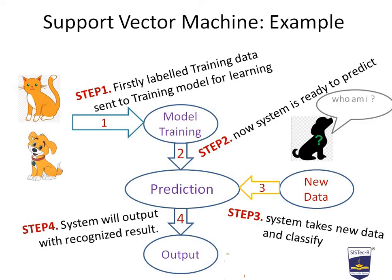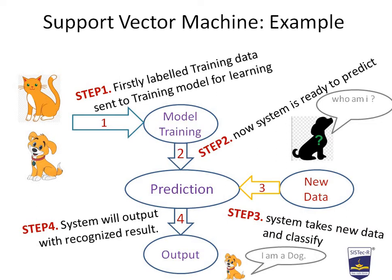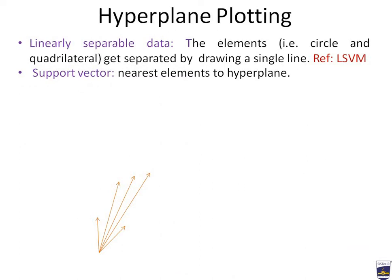In step four, the system outputs the recognized result — for example, the given image pattern is recognized as a dog. Now, what is a hyperplane and what is its role in Support Vector Machine? We need to understand linearly separable data. Taking images of dogs and cats, suppose we have circles and quadrilaterals as two classes — the elements get separated by drawing a single line. Support vectors are the nearest elements to the hyperplane.